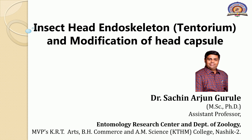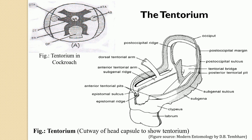Let us discuss what exactly the endoskeleton of the insect head is, which is known as the Tentorium. The Tentorium is an endoskeleton of the head — an internal cuticular framework developed as a result of ingrowth and fusion of some of the apodemal arms from the exoskeleton. In the exoskeleton, we have seen the anterior tentorial pits which are present on the clypeo-frontal suture, also referred to as the epistomal suture. From the inner side of this anterior tentorial pit, an ingrowth is developed, which forms part of the apodems of the anterior tentorial pit, ultimately forming the Tentorium.